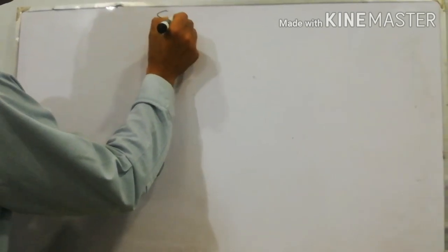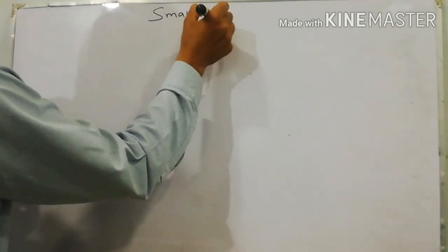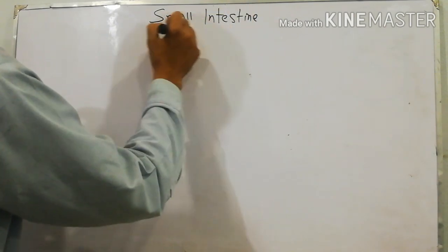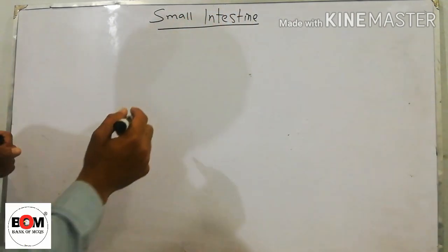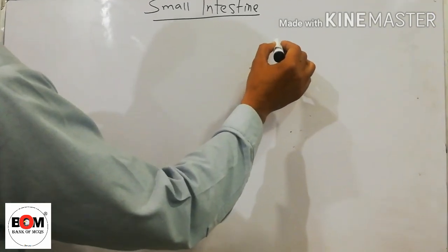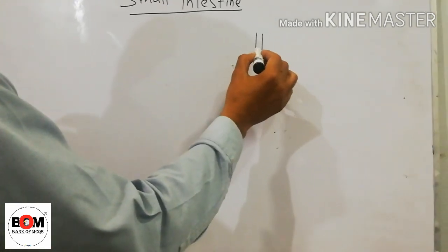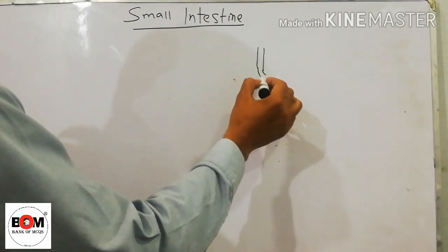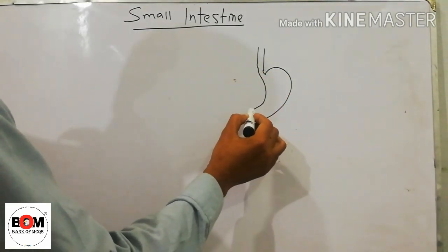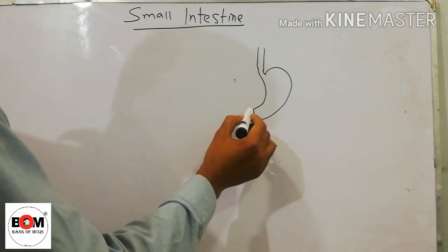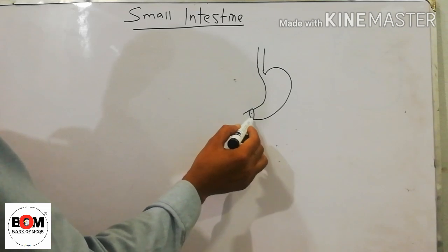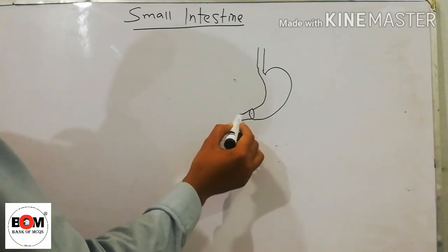The small intestine starts from the stomach. This is the esophagus and this is the stomach. The stomach ends at the pyloric sphincter, and then starts the small intestine.